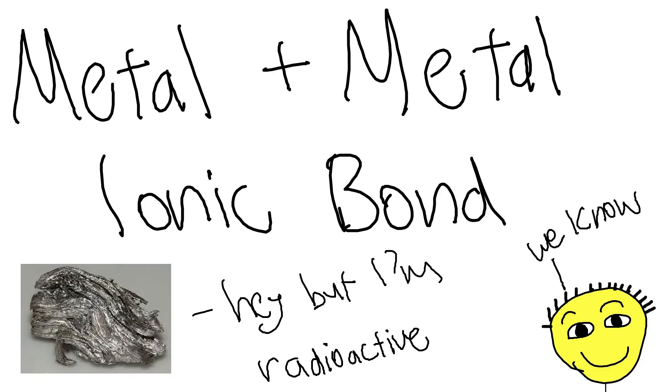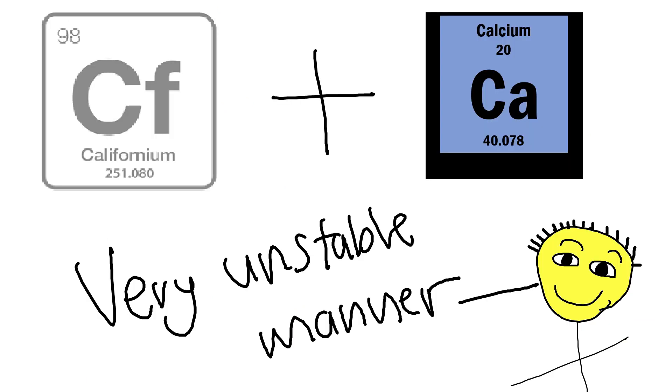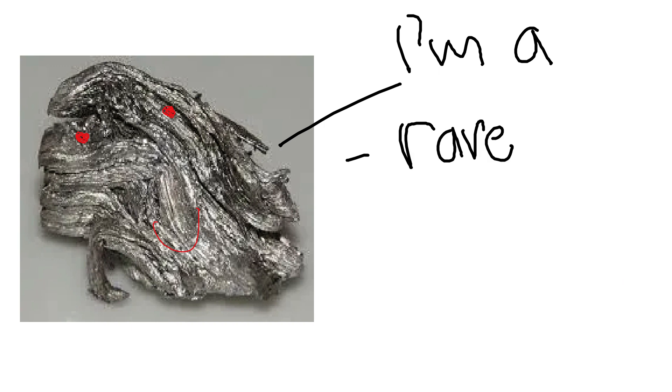Metal plus metal ionic bond: Californium can also bond with metal ions such as calcium, but in an unstable manner, to form a solid ionic compound. But Californium does not commonly form metal-metal ionic bonds with other elements as it is a rare synthetic element and is highly radioactive.